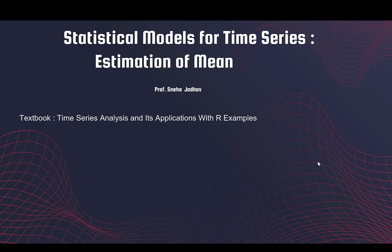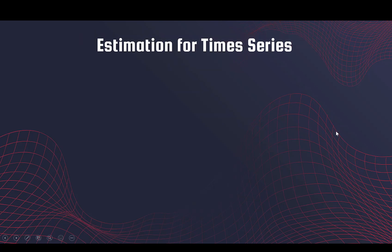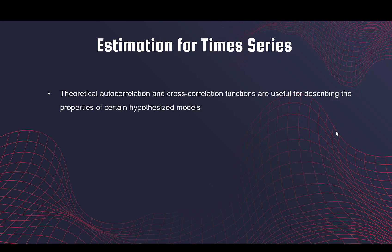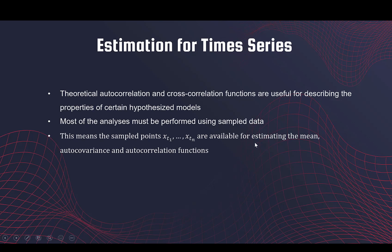Welcome back. In this video we shall see how to estimate the mean of a stationary time series from an observed data set. The theoretical autocorrelation and cross-correlation formulae derived so far are useful in describing properties of certain models, however for most analyses we need to perform them using an actual data set. In a time series data set we have n time points, sampling the time series X at points t1 through tn, and we need to use these for estimating the mean, autocovariance, and autocorrelation functions.